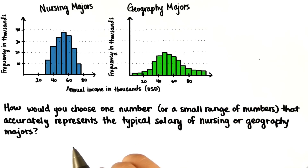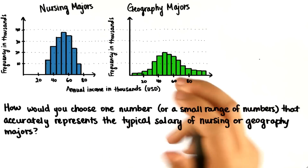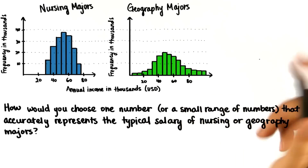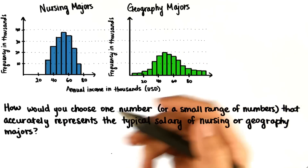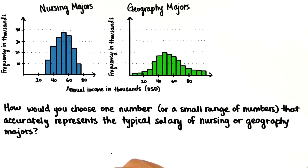How would you choose one number, or at least a very small range of numbers, that accurately represents the typical salary of nursing or geography majors?